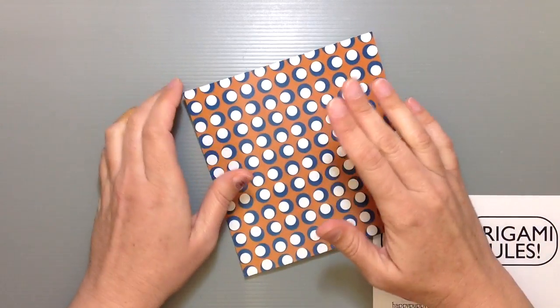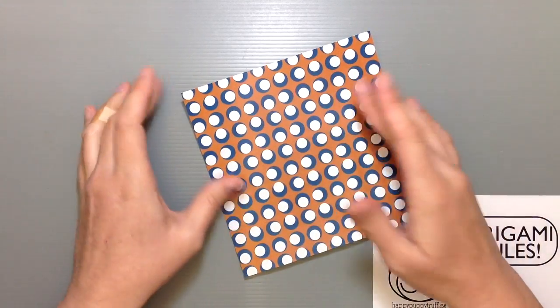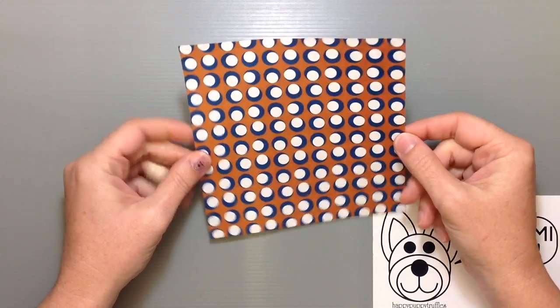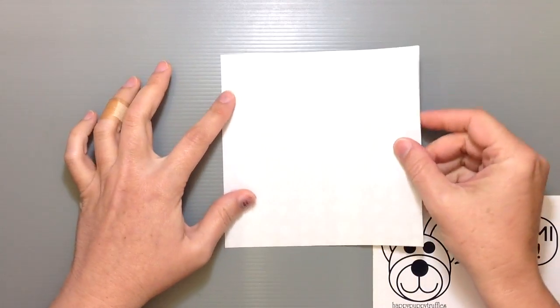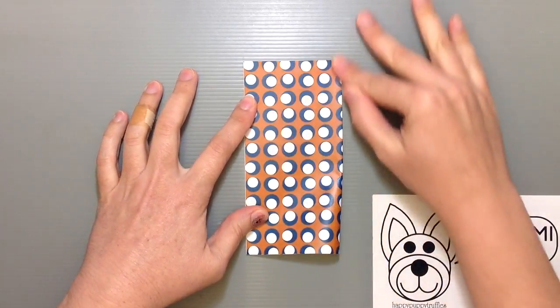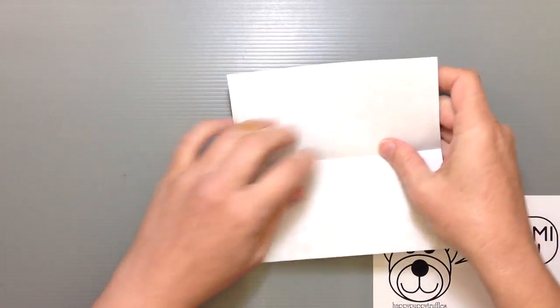As usual when making a box, I'll show you the steps with this paper. With the color side facing down, fold your paper in half. Open it up and fold it in half again.